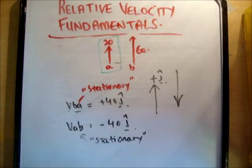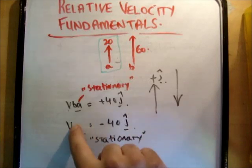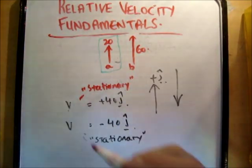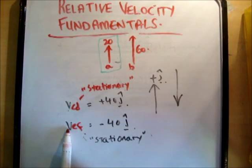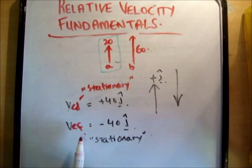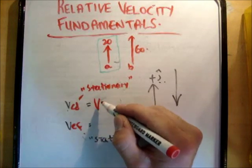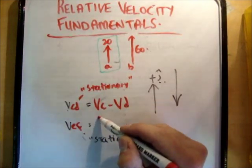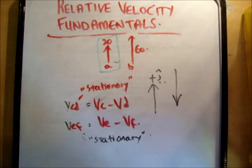So that's the fundamental thing — you need to get your head around that. Remember: in VBA, the second letter A is the one that believes it's stationary. And of course these can be any letters you want — you could have VCD, VEF, whatever. VEF would mean the velocity of E relative to F, where F believes it's stationary. VCD is the velocity of C relative to D, where D believes it's stationary. And to write it explicitly: VCD means VC minus VD, and VEF means VE minus VF. So that's a reasonable introduction to relative velocity — thank you very much for watching, pass it on to your friends and subscribe to my channel.